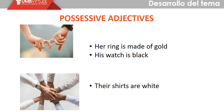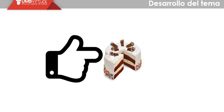Let's see more examples to clarify and give you clear sentences to allow you to practice before starting with the task. 'Her ring is made of gold' — here 'her' is the possessive adjective for she. 'His watch is black' — referring to him. 'Their shirts are white' — referring to all of them.